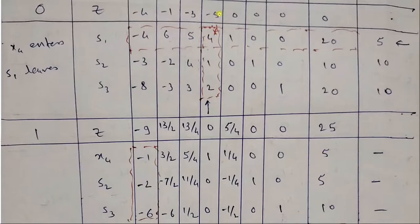With the help of this one, we will make above and below elements to be 0. Here, value of z is minus 5. We will multiply x4 by 5 and add it with z. Operation is z plus 5x4. Minus 4 minus 5 is minus 9. Minus 1 plus 5 into 3 by 2. Minus 3 plus 5 into 5 by 4 is 13 by 4. Minus 5 plus 5 into 1 is 0. 0 plus 5 into 1 by 4 is 5 by 4. 0 plus 5 into 0 is 0. 0 plus 5 into 0 is 0. 0 plus 5 into 5 is 25.